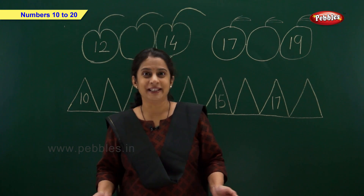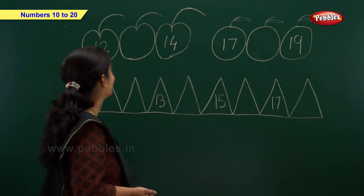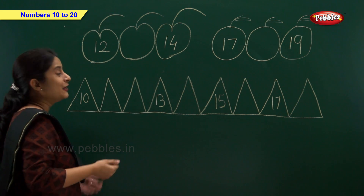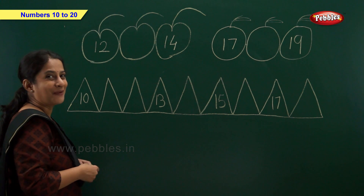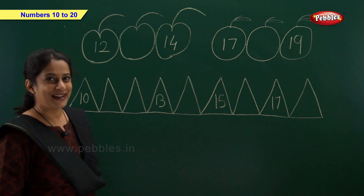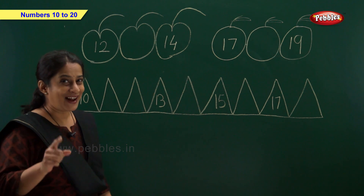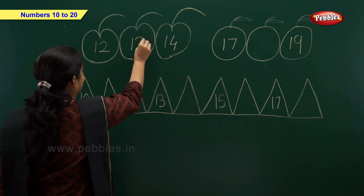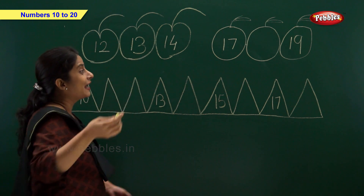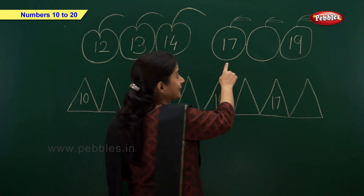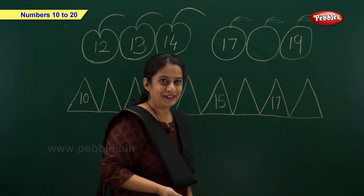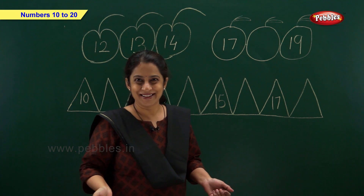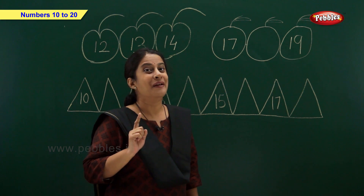Let us write the missing numbers. We have 12 and 14 — so which number comes in between? Come on, who is going to tell me? Write number 13. And now we have 17 and 19 — so which number comes between 17 and 19? Write number 18.